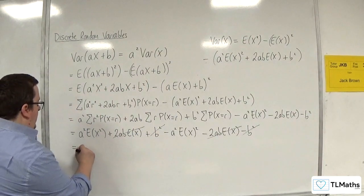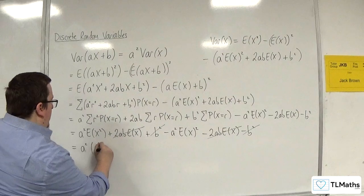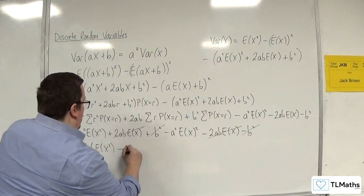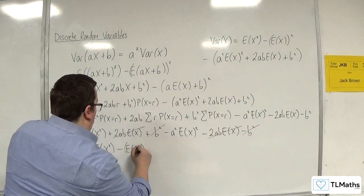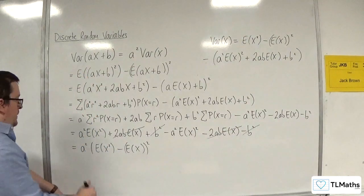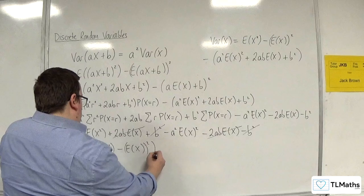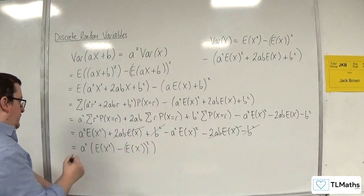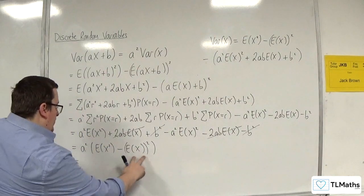So I'm left with a squared times e of x squared take away e of x all squared. That I've got there. Close the bracket. And that is var of x.